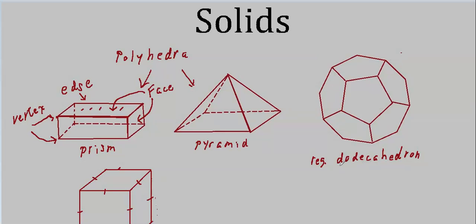This is a regular dodecahedron — every face is a regular pentagon. If they weren't regular, how would they all fit together? Each side has to match the adjacent side, otherwise these things won't fit together and form a three-dimensional object. It's made up of twelve faces. 'Dodeca' means twelve — 'deca' is ten and 'do' is two, so it's ten plus two, not two times ten. And remember: twelve faces, not sides.